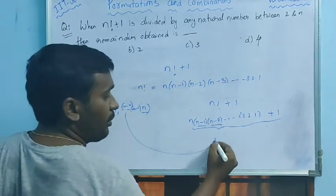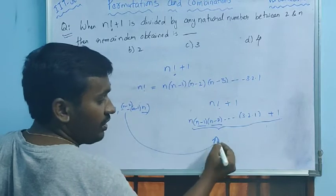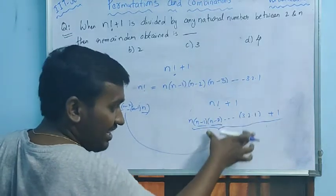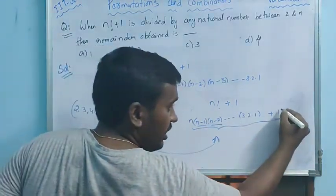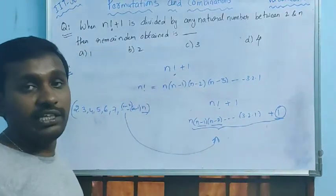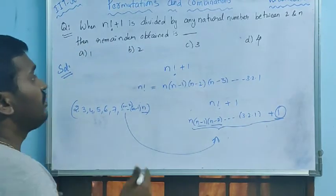So whatever this, if you divide, here totally it will be divisible, but the remainder always will be one only. The remainder is always one only.